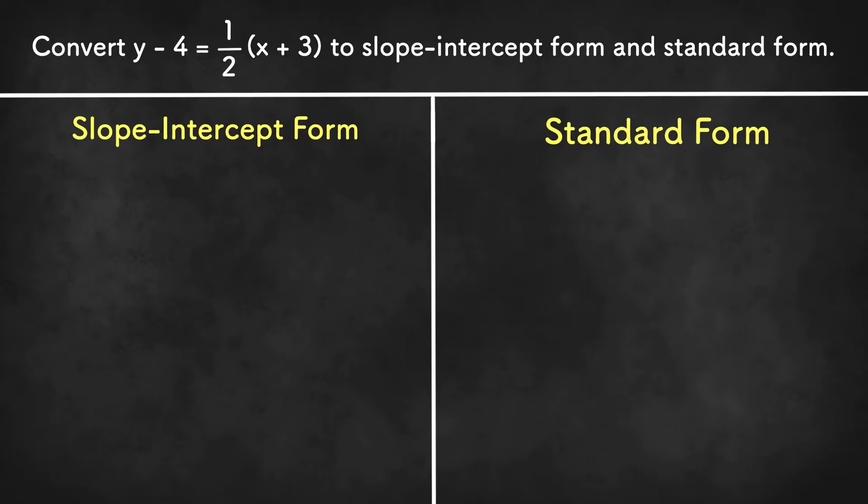So here we are asked to convert y minus 4 equals 1/2(x plus 3) to slope-intercept form and standard form.